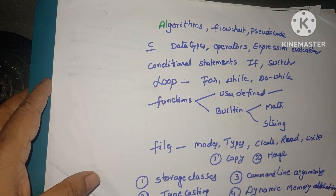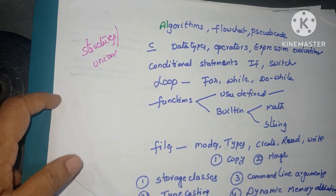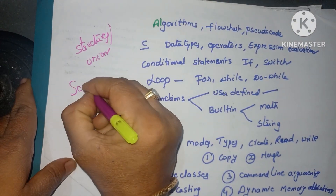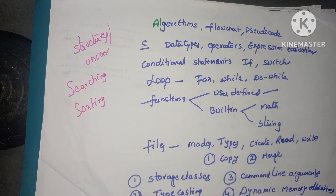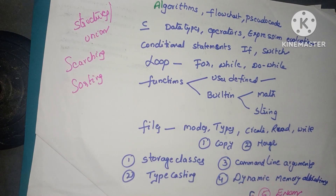Read structures and unions — the difference between structures and unions — and write one program for structures and one for unions. These are also very important. The last unit covers searching and sorting: linear search and binary search, and three different types of sorting. For data structures students, study stacks, queues, and linked lists — what is a stack, applications of stack, what is a queue, applications of queues, insert and delete operations, and types of linked list. Read pointers as well.